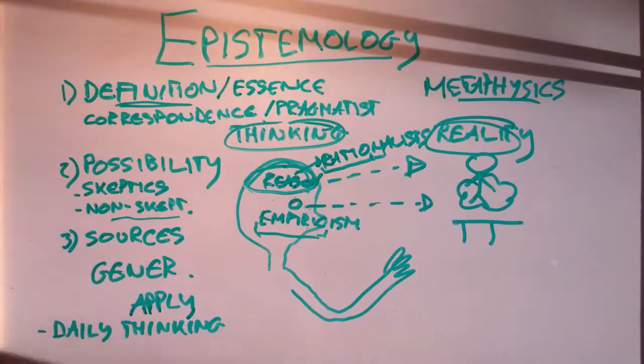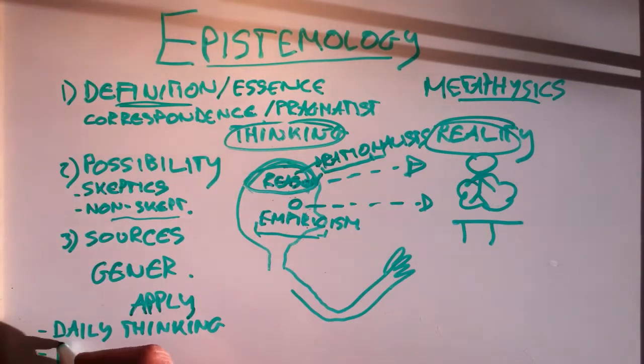So these are all applications of the theory of knowledge, of epistemology. And hopefully epistemology can be useful in that sense. Now, philosophers don't just apply to daily thinking. The most important application of epistemology is on scientific thinking, on scientific knowledge. This is in the branch called philosophy of science.